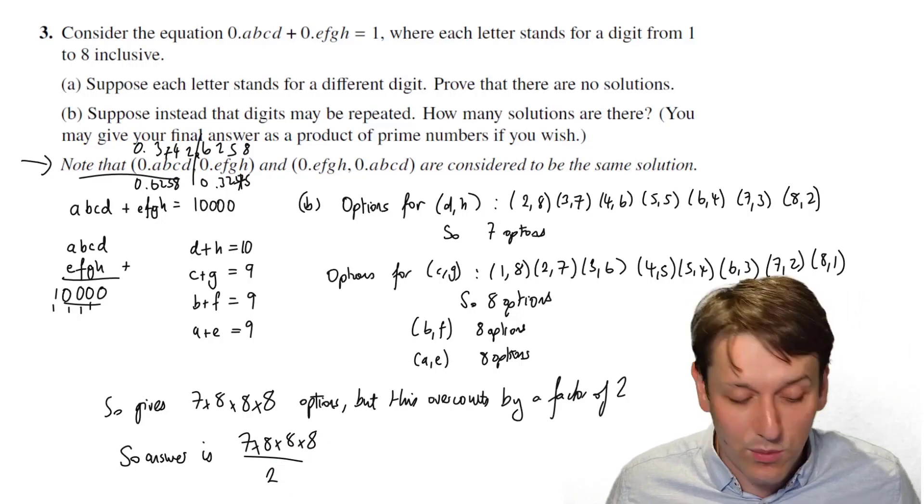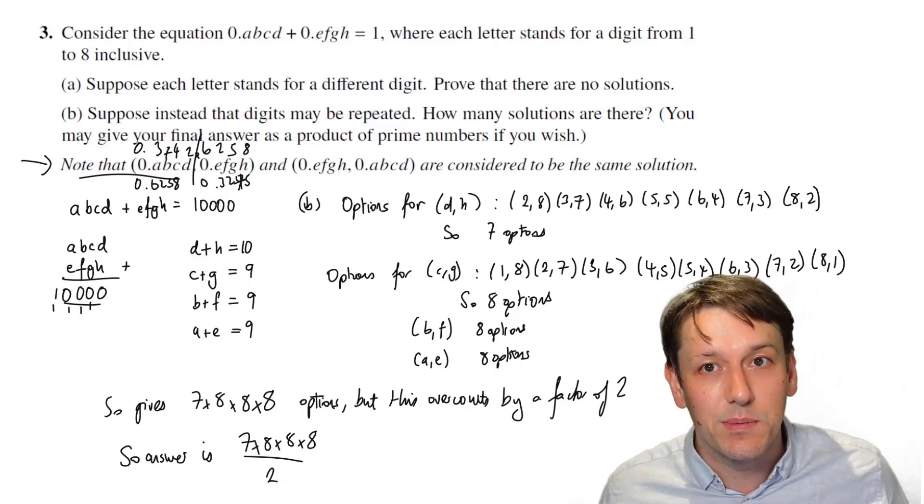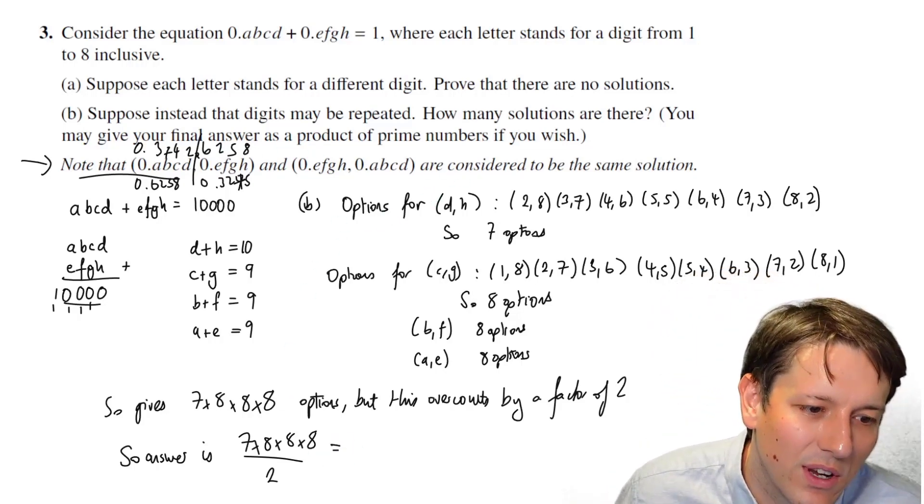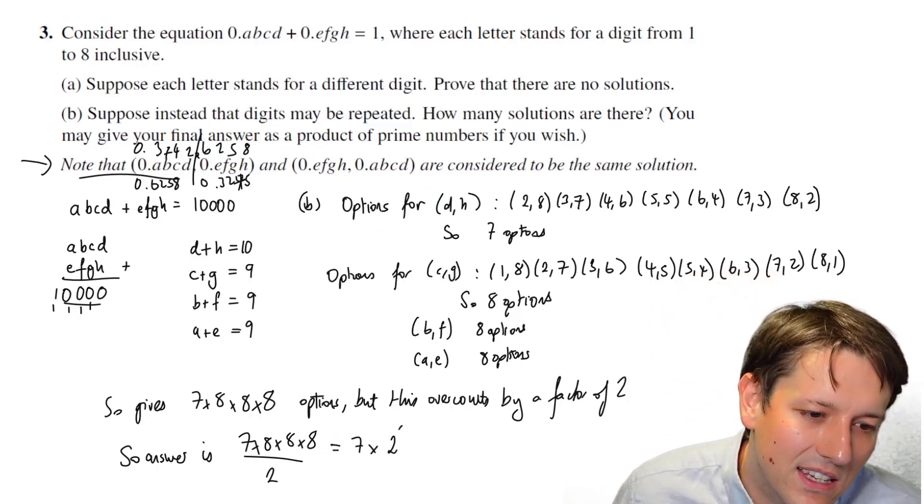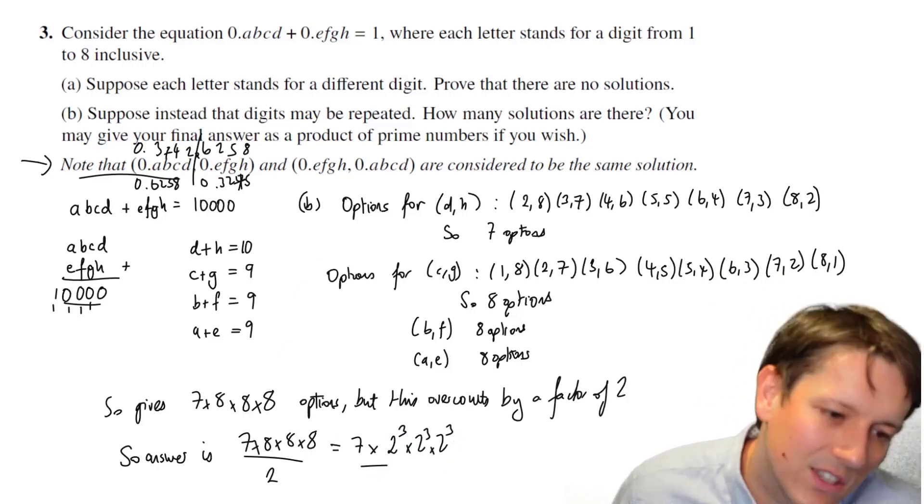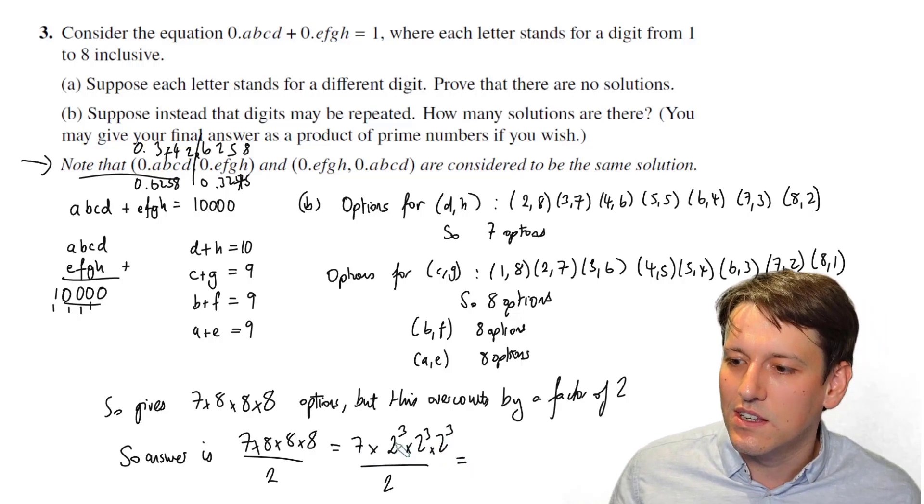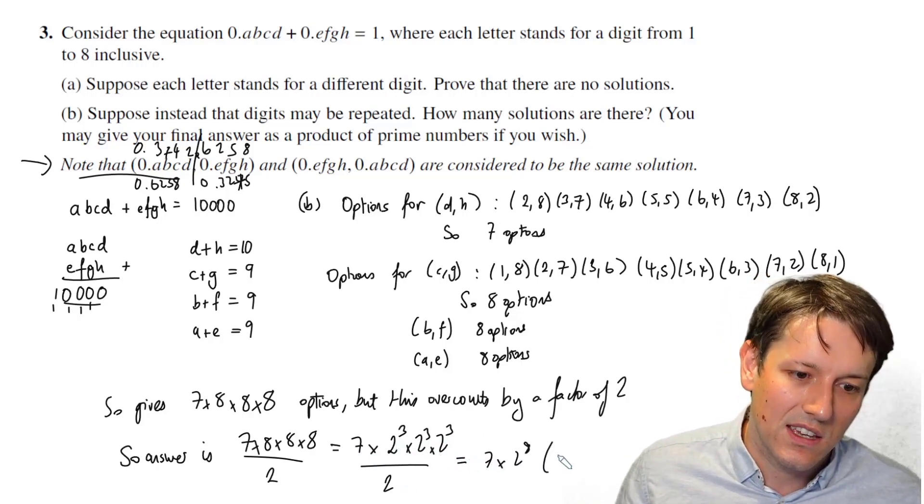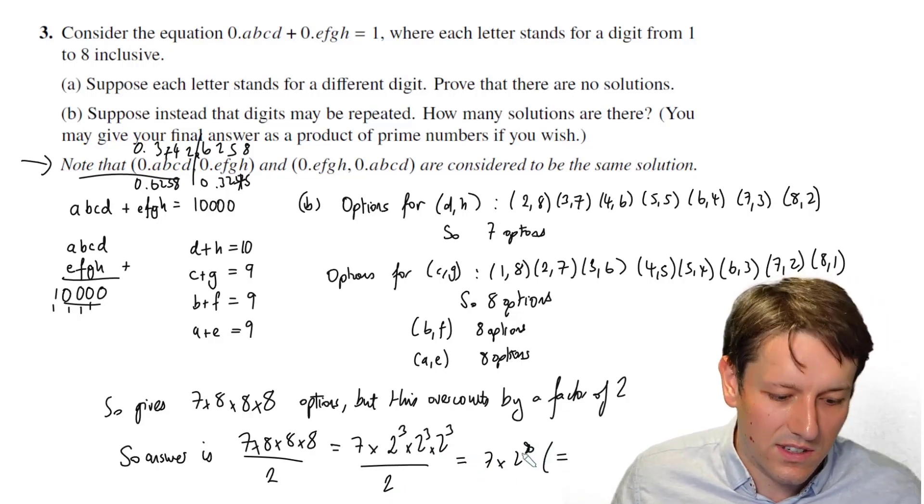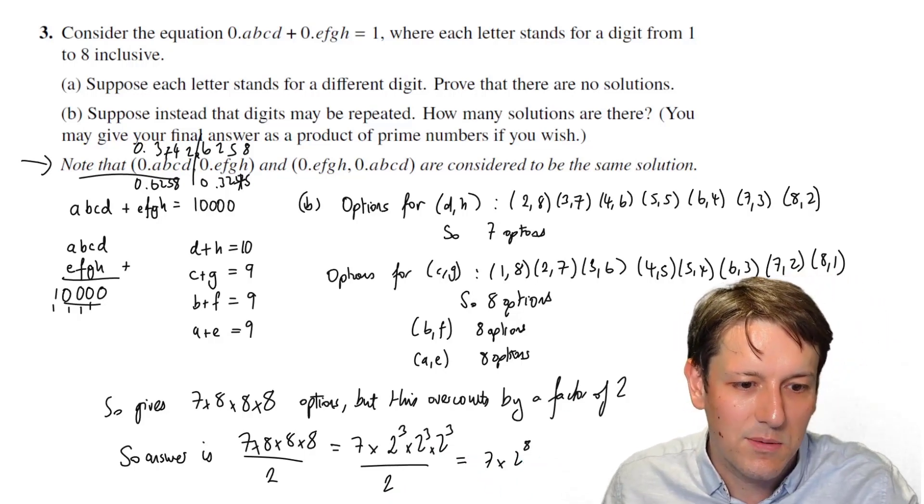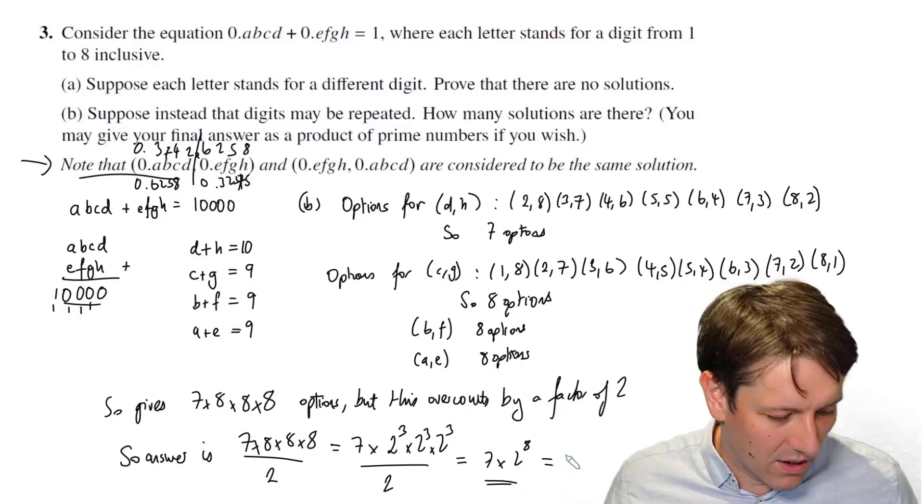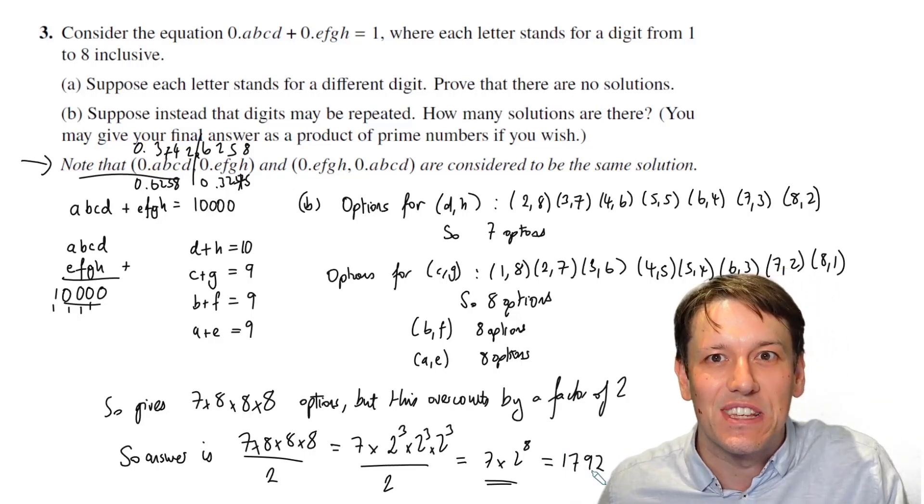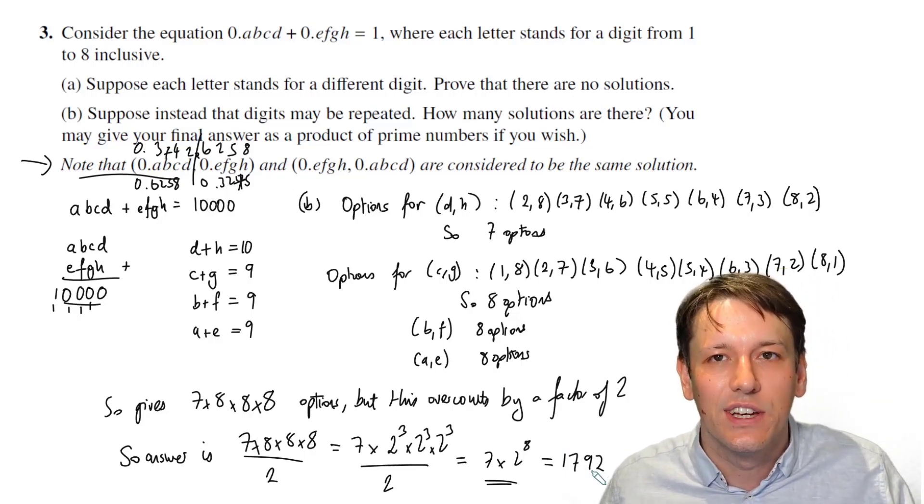So we need to divide the final answer by 2, so the answer is 7 times 8 times 8 times 8 all divided by 2, and we can either work that out as a number, it comes out to be 1,792, or it says you can give your final answer as a product of prime numbers if you wish. So we can write 8 as 2 cubed and use our rules of indices to say that we know this is 7 times 2 to the 9 divided by 2, so 7 times 2 to the 8, and optionally, for no extra marks, it's told us that this is a perfectly acceptable final answer, so we'll get full marks there. We could also say that's 1,792, and again, you'd get full marks, no obligation to do the index form.